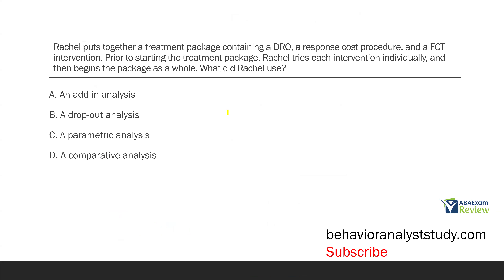Rachel puts together a treatment package containing a DRO, a response cost procedure, and an FCT intervention. Prior to starting the treatment package, Rachel tries each intervention individually and then begins the package as a whole. What did Rachel use?